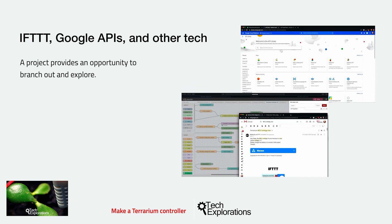A project gives us an opportunity to branch out and explore. While my primary learning objectives were Node-RED and MQTT, a more complete deliverable required adding additional components. I decided to use Google's Drive and Sheet APIs and IFTTT as representative technologies of what is available to makers right now. Both technologies are mature and very useful. Node-RED made it easy to interface my flows with both. Integrating these two in the terrarium controller project made the project itself much more complete, and also proved to me that there is massive potential for growth.